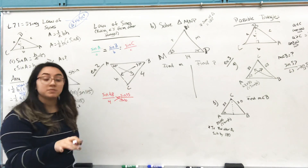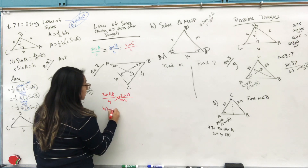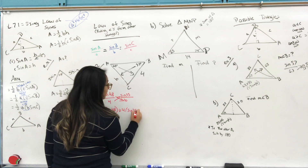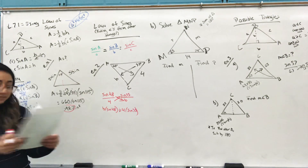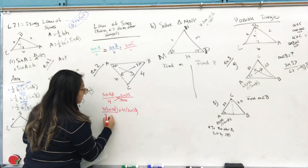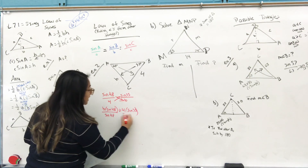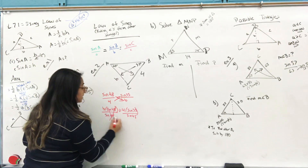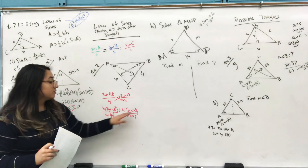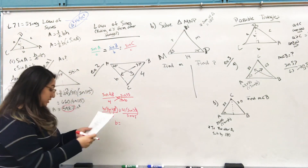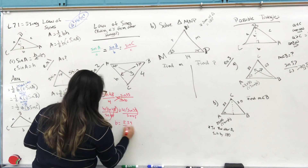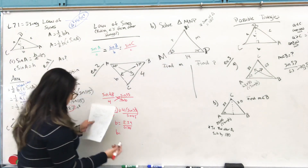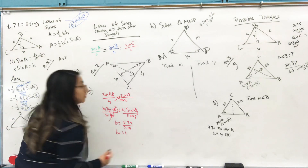From this point, cross multiply: b · sine of 48 = 4 · sine of 35. To get b by itself, divide both sides by sine of 48. Four times sine of 35 is approximately 2.29, and sine of 48 is approximately 0.74. Dividing those two gives you b = 3.1, and that's your answer.